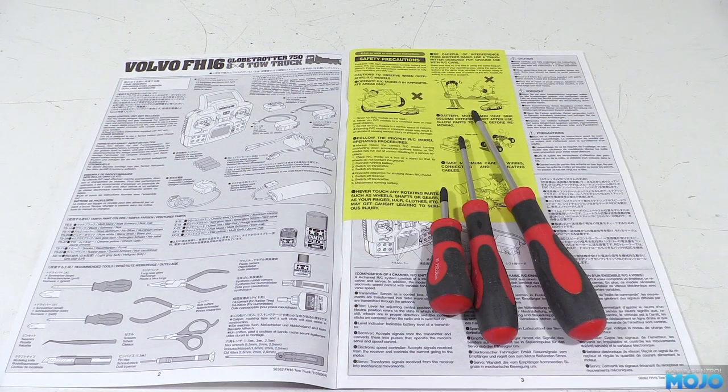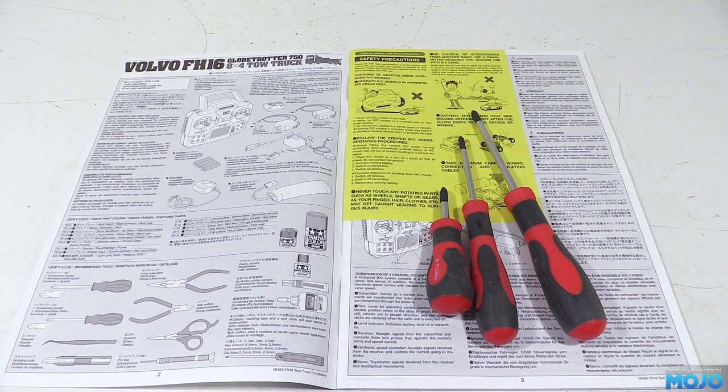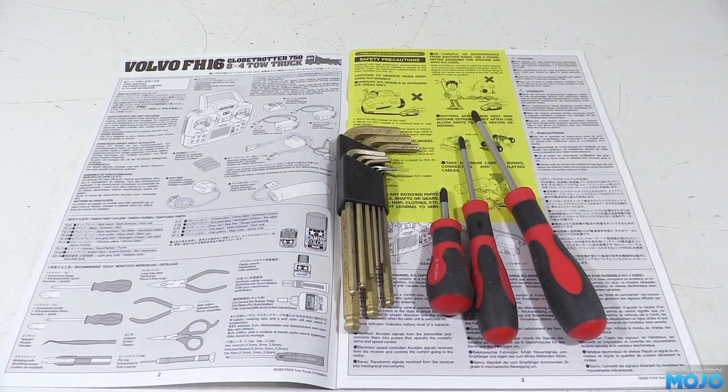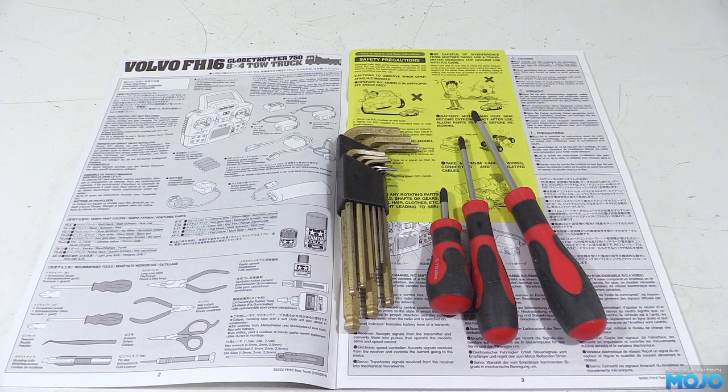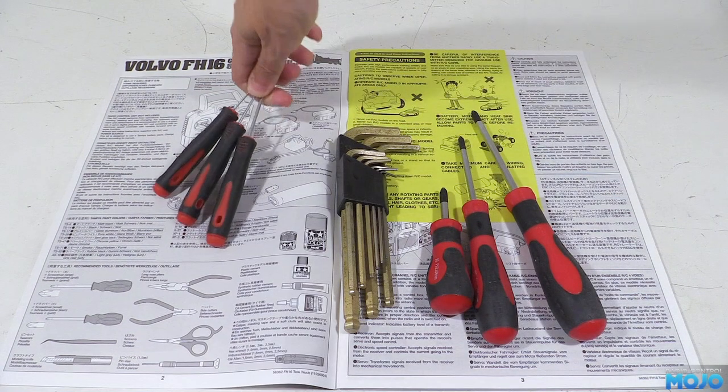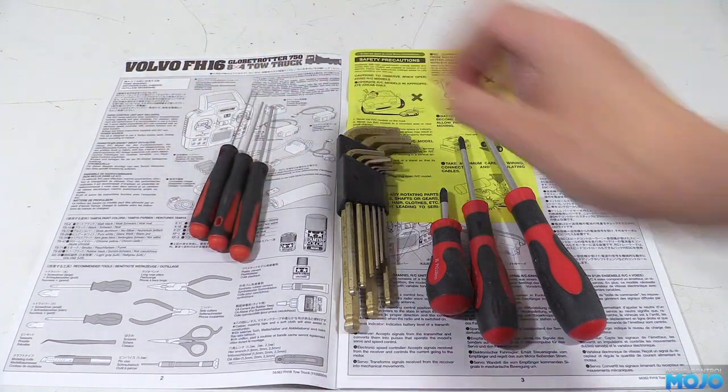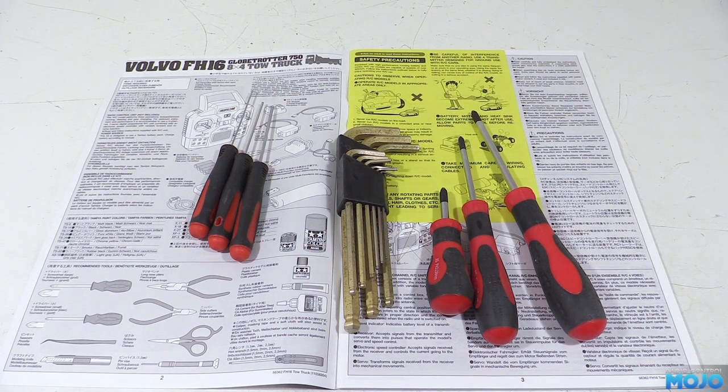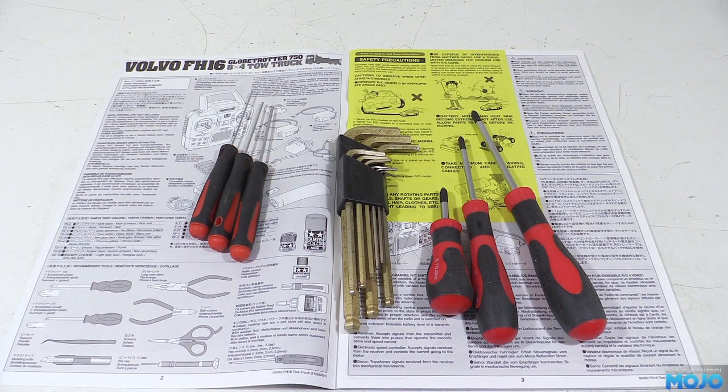The kit comes with some basic Allen keys, but a set of ball ended ones does come in handy here and there. A set of square ended Allen drivers is nice to have too. Most of the screws are of course JIS, but for the few Allen heads, it's nice to have the right tools.